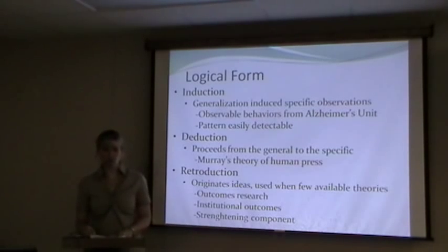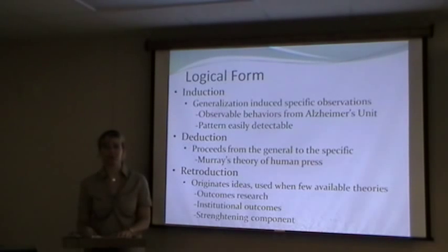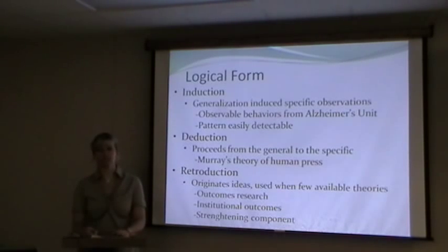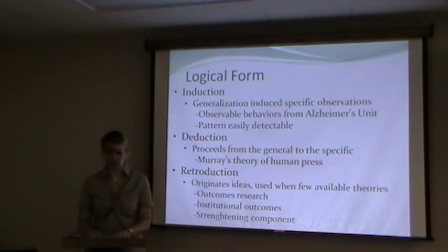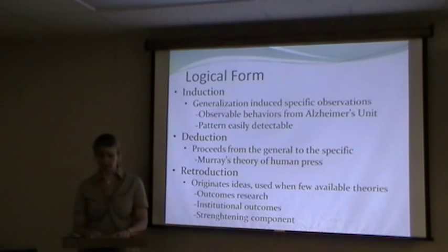The logical form Kolkaba used in developing her theory involved three different methods: induction, deduction, and retroduction. Induction generalizes from specific observations — she observed behaviors from her Alzheimer's unit and detected a pattern among those behaviors. In deduction, which proceeds from the general to the specific, she used Murray's theory of human pressure as the framework. In retroduction, which originates ideas and is used when few theories are available, she applied it to outcomes research, where very few available theories existed, enhancing nursing investigation by adding a theoretical framework.